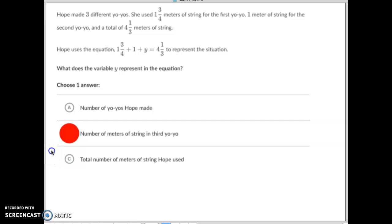Let's read the last one just to make sure. Does it equal the total number of meters she used? No. That would be the four and a third right there. So it is the third yo-yo - how much string she used for the third yo-yo.